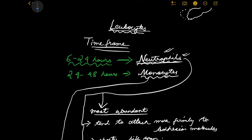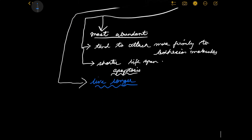So if asked what leukocytes you will find at an infection or inflammation site, your counter question should be: what time frame are you talking about? If it is within 6 to 24 hours of infection, neutrophils will predominate. If a little later, then monocytes and macrophages. But this is not a hard and fast universal rule - there are exceptions.